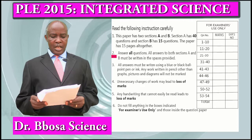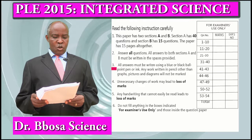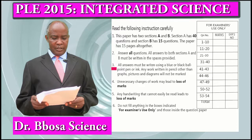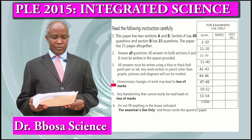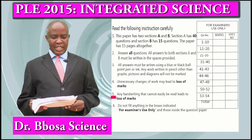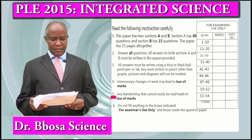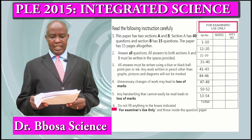Answer all questions. All answers to both Section A and B must be written in the spaces provided. All answers must be written using a blue or black ballpoint pen or ink. Any work written in pencil, other than graphs, pictures, and diagrams, will not be marked. Unnecessary changes of work may lead to loss of marks. Any handwriting that cannot easily be read may lead to loss of marks.